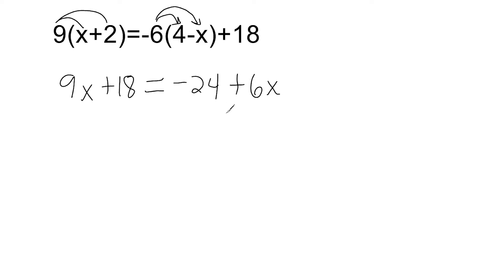That is why we write a plus sign here. A single x means the coefficient is 1, so 6 times 1 is 6 — that is where the 6 comes from. Then we just drop this constant of 18 down. Now what we have to do is get all of our constants on one side of the equal sign and all of our coefficients on the other side. It really doesn't matter what side you choose. Traditionally, most teachers put all of the variables on the left and all of the constants on the right.